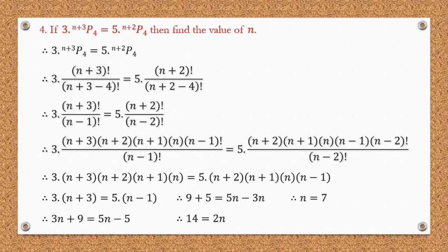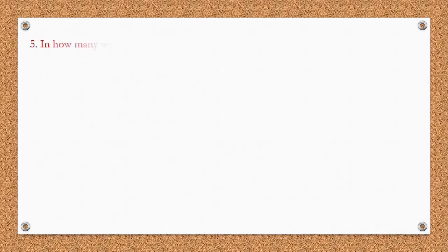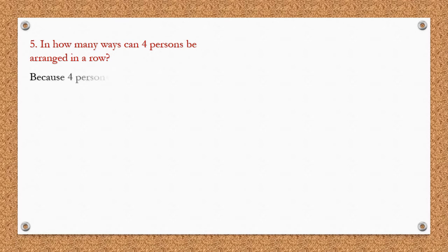Question 5: In how many ways can 4 persons be arranged in a row? 4 persons can be seated at 4 places, so it is 4P4. From the standard format, 4P4 = 4! = 4 × 3 × 2 × 1 = 24. Done — that's how you use standard formats.